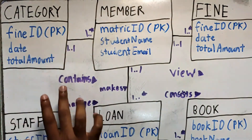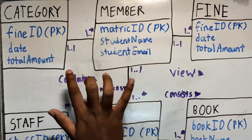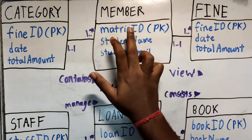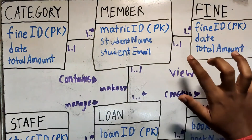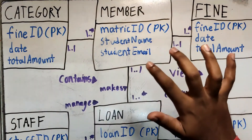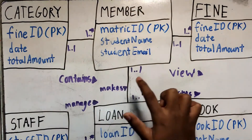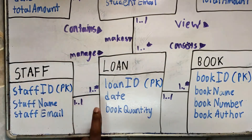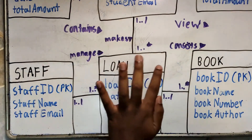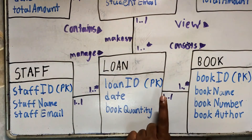A category contains many members, whereas a member can only be in one category. A member can view many fines, whereas a fine can only be viewed by one member. A member can make many loans, whereas a loan can only be made by one member. A staff can manage many loans, whereas a loan is managed by only one staff. A loan consists of many books, whereas a book can only be inside one loan.